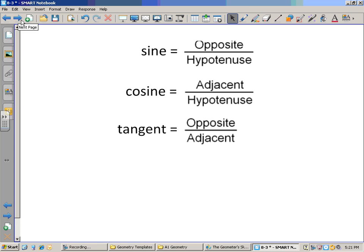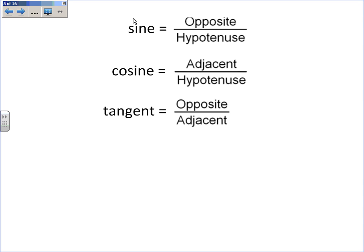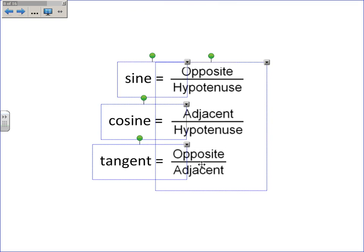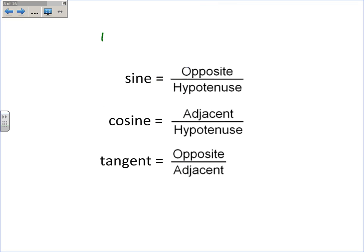These three ratios are so important and so commonly used that they've been given names. The opposite over hypotenuse is called the sine ratio. The adjacent over the hypotenuse is called the cosine ratio. And the opposite over the adjacent is called the tangent ratio. These are the three types of trigonometric ratios.